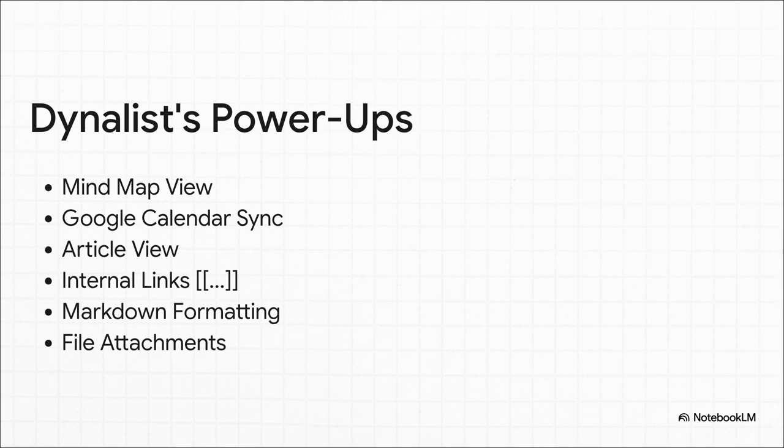Dynalist comes back swinging with a whole arsenal of power-ups. You can instantly turn your outline into a mind map for brainstorming. You can sync your due dates directly to your Google Calendar so you never miss a deadline. You can even use internal links to connect all your notes, essentially building your own personal Wikipedia. It's a whole other level of organization.